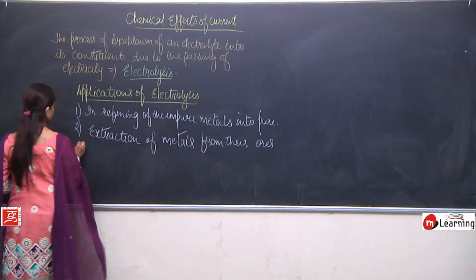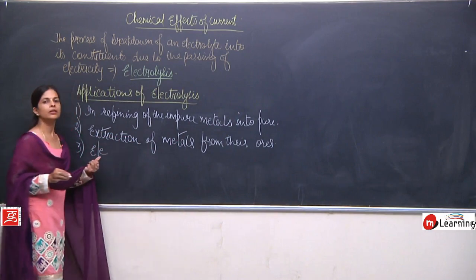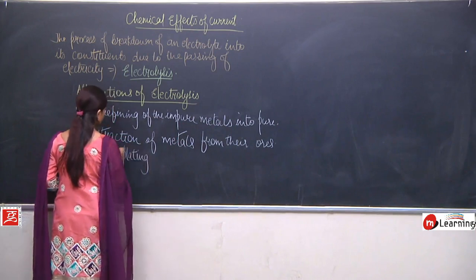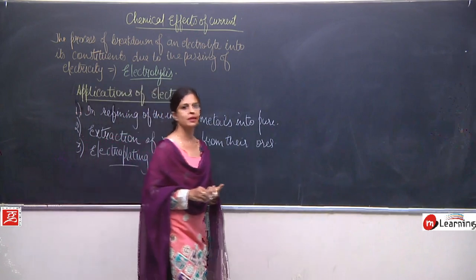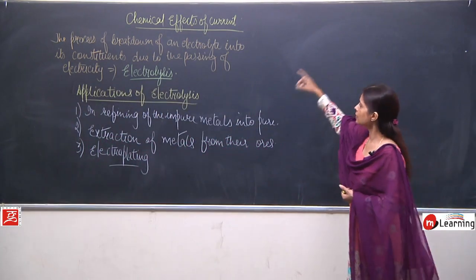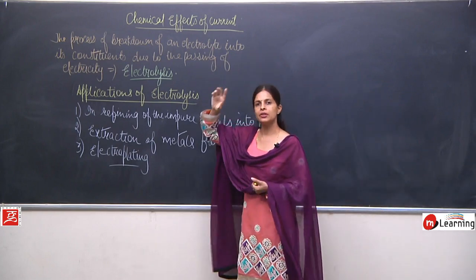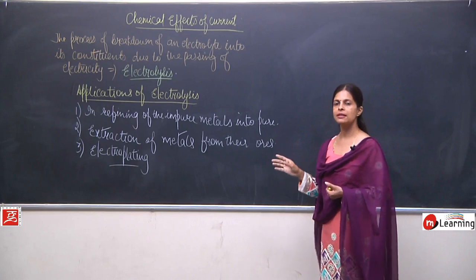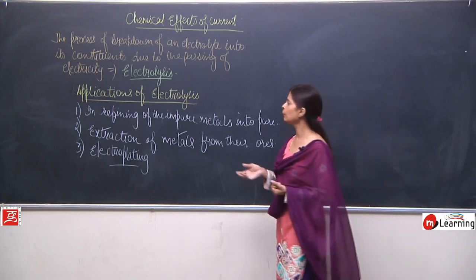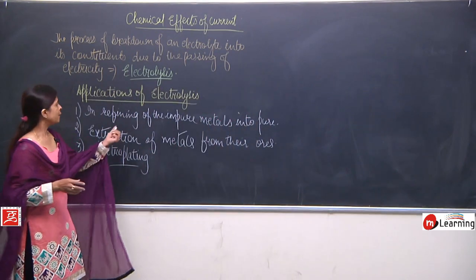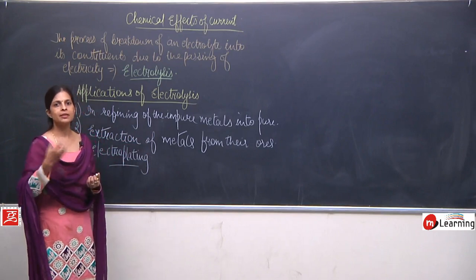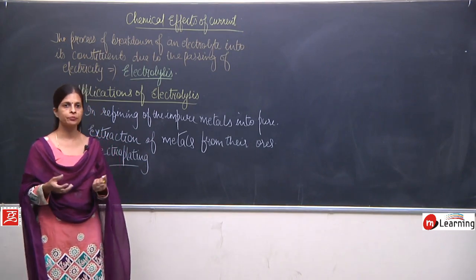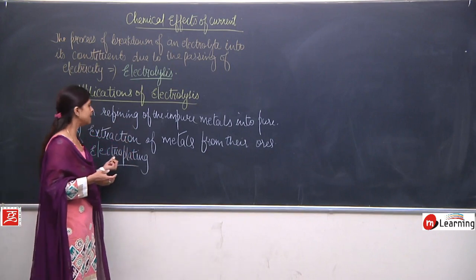The third use of electrolysis is electroplating. So what is electrolysis? The breakdown of the electrolyte into its constituent ions due to the passing of electricity is known as electrolysis. It is important in the refining of impure metals, in the extraction of metals, and in the process of electroplating.